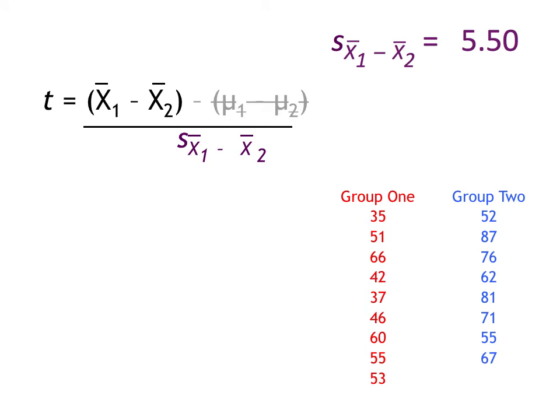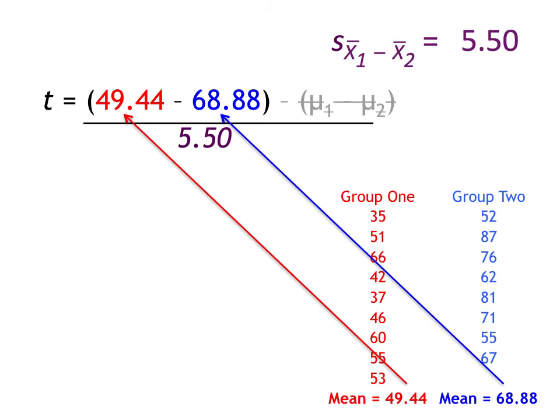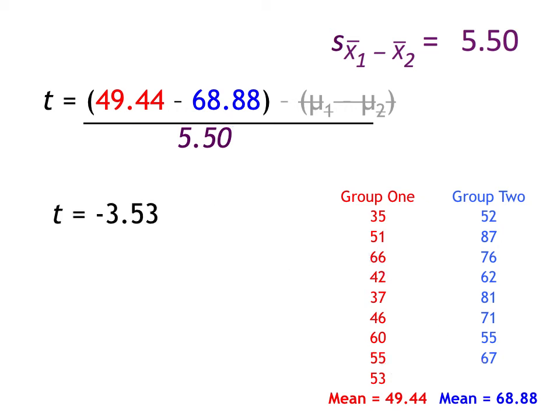Now let's look at what we've got. Back to our test statistic — we now have our standard error term for the denominator. We're going to test to see if the mean from group 1 is statistically different from the mean from group 2. I replace the means and the standard error in my equation, and all we have to do is solve it. We find that our test statistic ends up being negative 3.53.